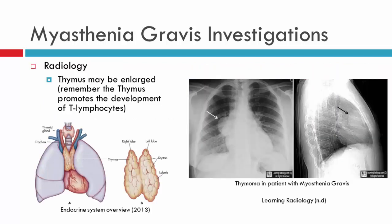Radiology can also be performed, where specifically an enlarged thymus will be looked for in these patients. The image shown here is of a patient with a thymoma who has Myasthenia Gravis, and you can just see the outline of the thymoma in the image.